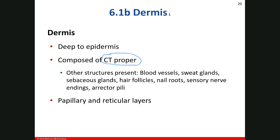There are three subcomponents of each. For connective tissue proper, the loose types are areolar, adipose, and reticular. For the dense types, you have dense regular connective tissue, dense irregular connective tissue, and elastic.